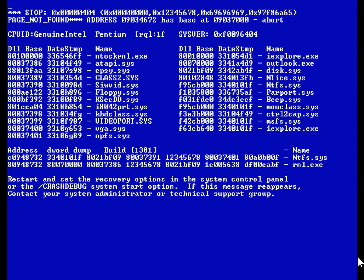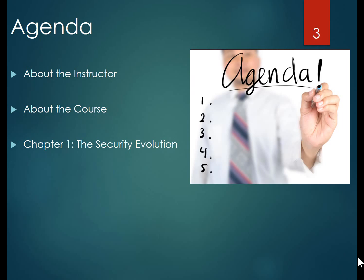We're going to explore all of those different options for how we manage risk within a particular information technology system. Here's the agenda for Chapter 1. This is the first of eight videos covering Chapter 1. This video covers an introduction, a little about the professor, and the course. Subsequent videos will get into core definitions, design principles, and a discussion of two external articles associated with risk management to bring everyone up to a base level of definitions.